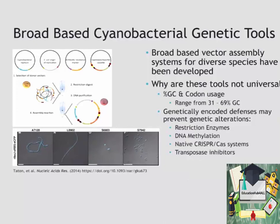Those systems have been primarily developed for our model cyanobacterial systems. Species such as Synechococcus elongatus, Synechocystis, or Anabaena have all been studied and manipulated for quite a number of decades. But now many people are interested in finding new species and manipulating those. Broad-based cyanobacterial genetic tools have been developed both here at UCSD and abroad, taking lessons from synthetic biology by creating parts that can be combined in a standardized method — as shown in the top figure — to generate vectors that can, in a modular fashion, be used to manipulate these cells.